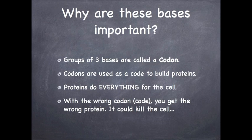You might be wondering why we need to care about matching all these bases. Groups of three bases together are called a codon, and we use those codons as a code to build our proteins. That code tells which part of the protein goes where. Proteins do everything for the cell, so if you put in the wrong code, you get the wrong protein, which could in some cases kill the cell — though sometimes it's beneficial.